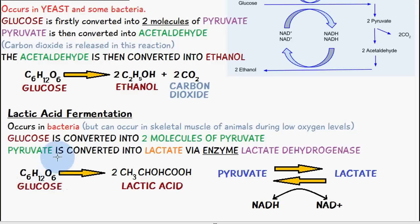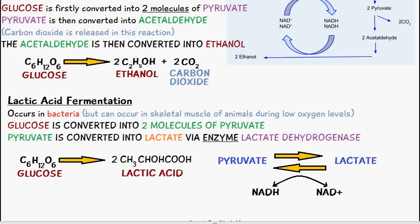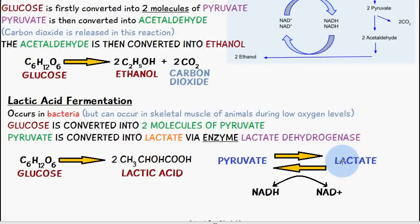This equation shows lactic acid fermentation: a molecule of glucose is converted into two molecules of lactic acid. I also included the conversion of pyruvate into lactate via the enzyme lactate dehydrogenase. For this reaction to occur — pyruvate being converted into lactate — NADH is converted into NAD+. And when lactate is being converted back into pyruvate, NAD+ is converted into NADH.